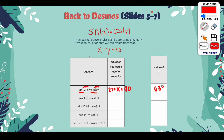Sine of 17.8 equals cosine of X. This is only true if this angle plus this angle equals 90. So 90 minus 17.8 gives us 72.2 degrees.